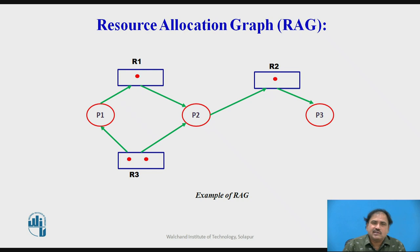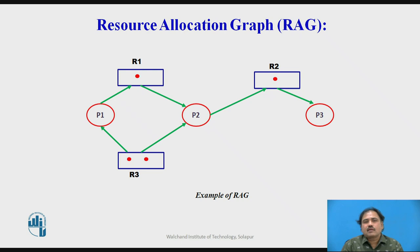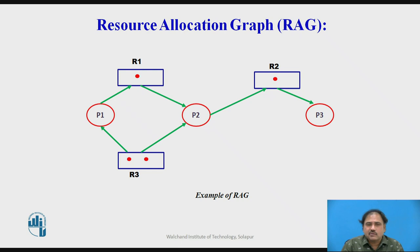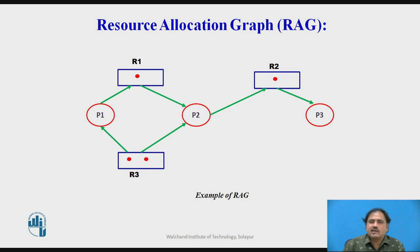Let us read a complete RAG example with processes P1, P2, P3 sharing resources. R1 has one instance, R2 has one instance, and R3 has two instances. An instance of R3 is allocated to process P1. P1 requires resource R1, so an arrow goes from P1 to R1. Process P3 is allocated resource R2 and does not require any additional resource for execution.